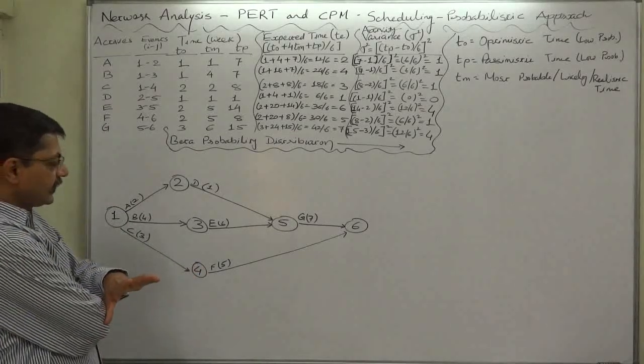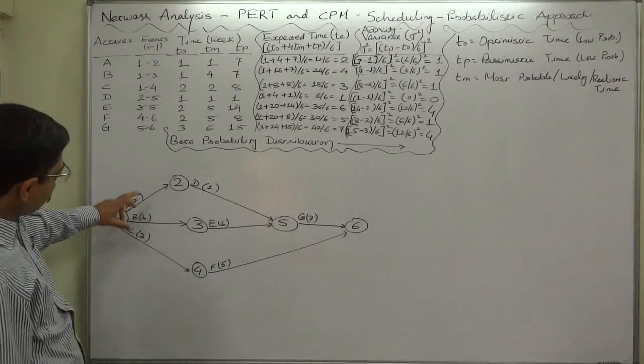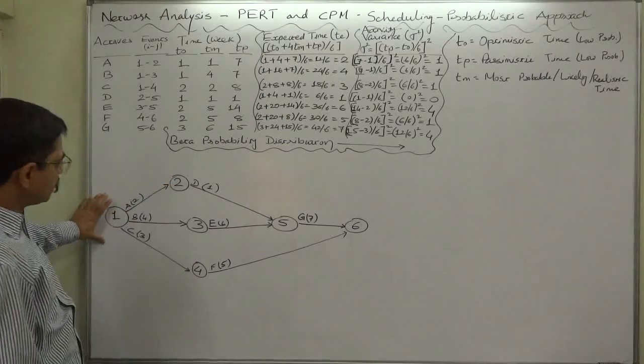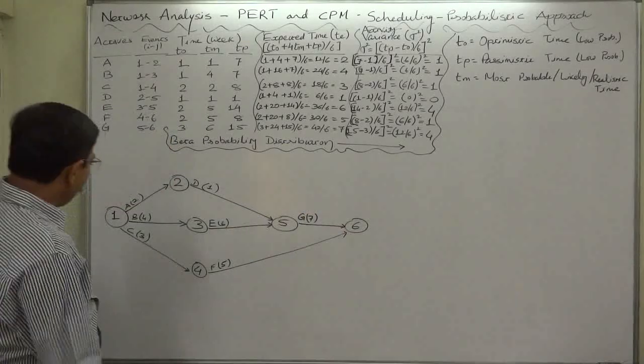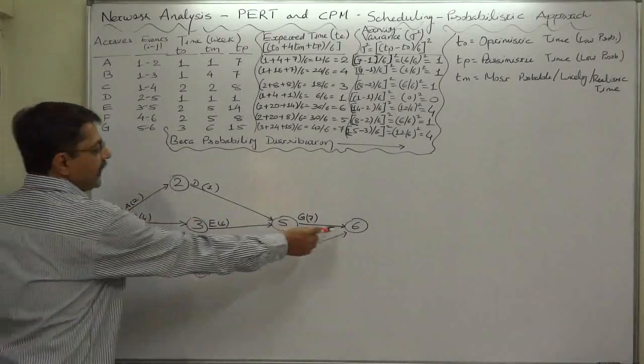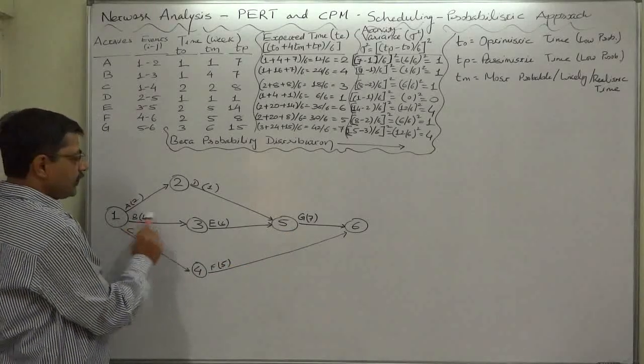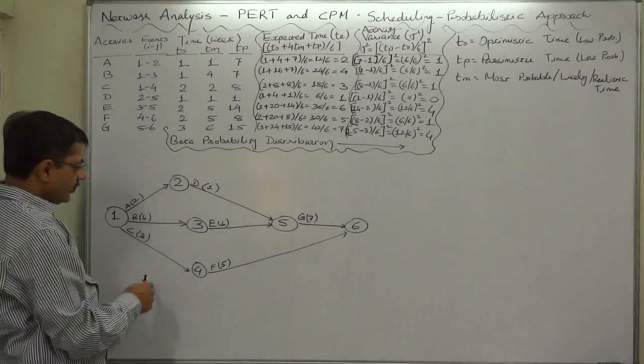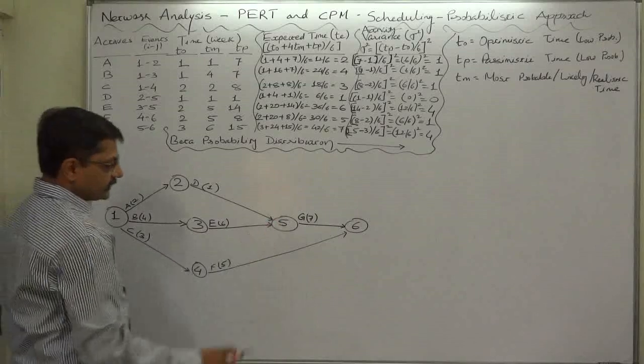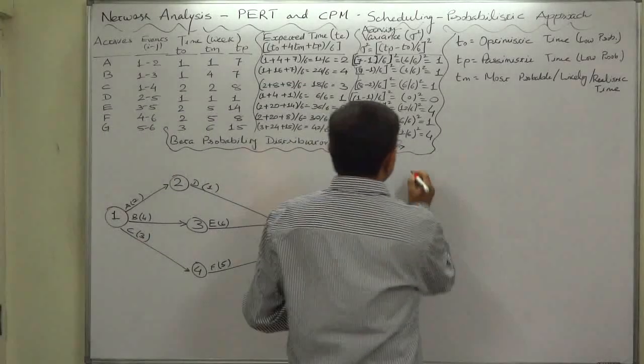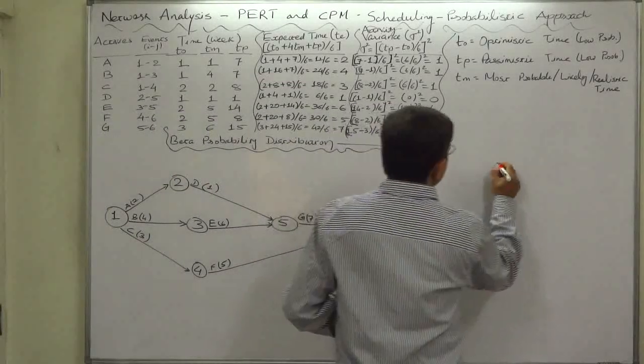To determine the critical path, there are only three possible paths from start to finish of the project: one is 1-2-5-6, another is 1-3-5-6, and another is 1-4-6. So let's compare path duration.